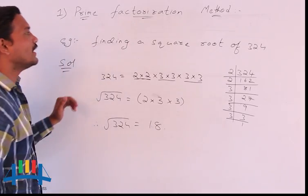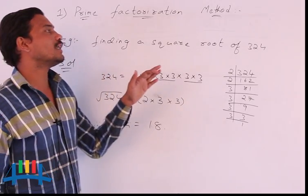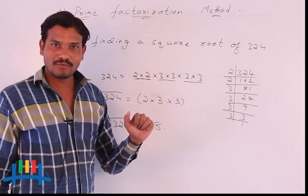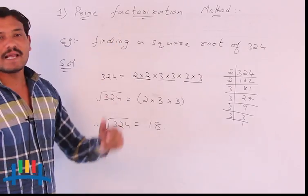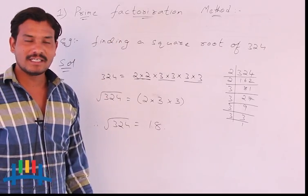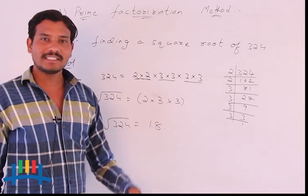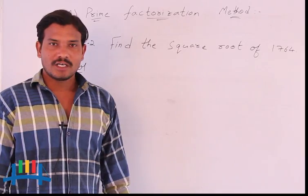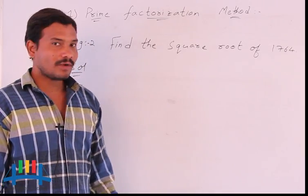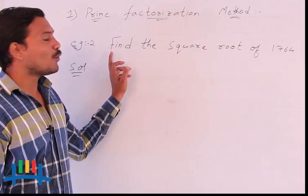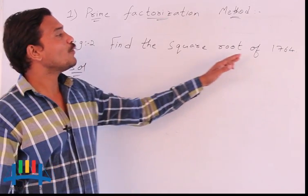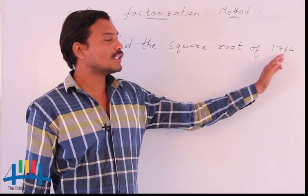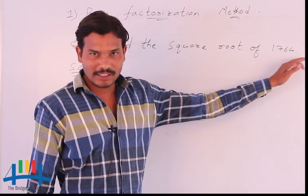This is the process to find the square root of 324 using the prime factorization method. Now we will go for the second example. I will consider one more example: find the square root of 1764.